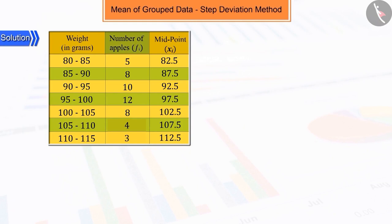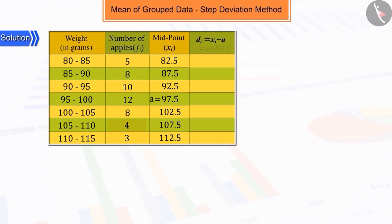To simplify the mean, assume 97.5 as the assumed mean A from among the XI and obtain the mean difference DI between XI and A.